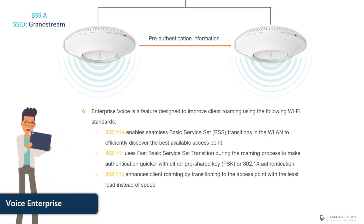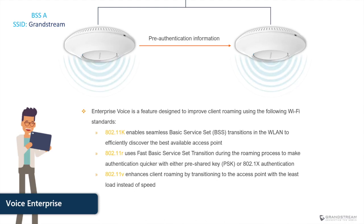When delay-sensitive applications or devices such as voice or video are deployed, it is good practice to enable Voice Enterprise, which is designed to improve the roaming experience of wireless clients. This feature is built on three 802.11 standards: 802.11k, 802.11r, and 802.11v. The wireless client needs to support these standards, as some legacy devices might not. You can also choose to enable only one standard — for example, 802.11r, which makes the authentication process faster.